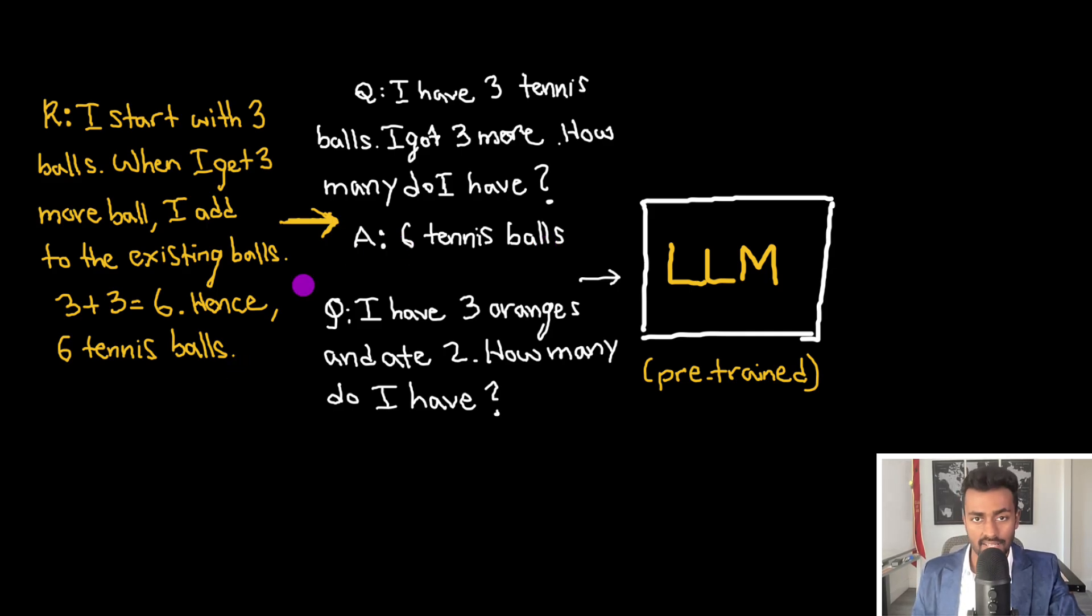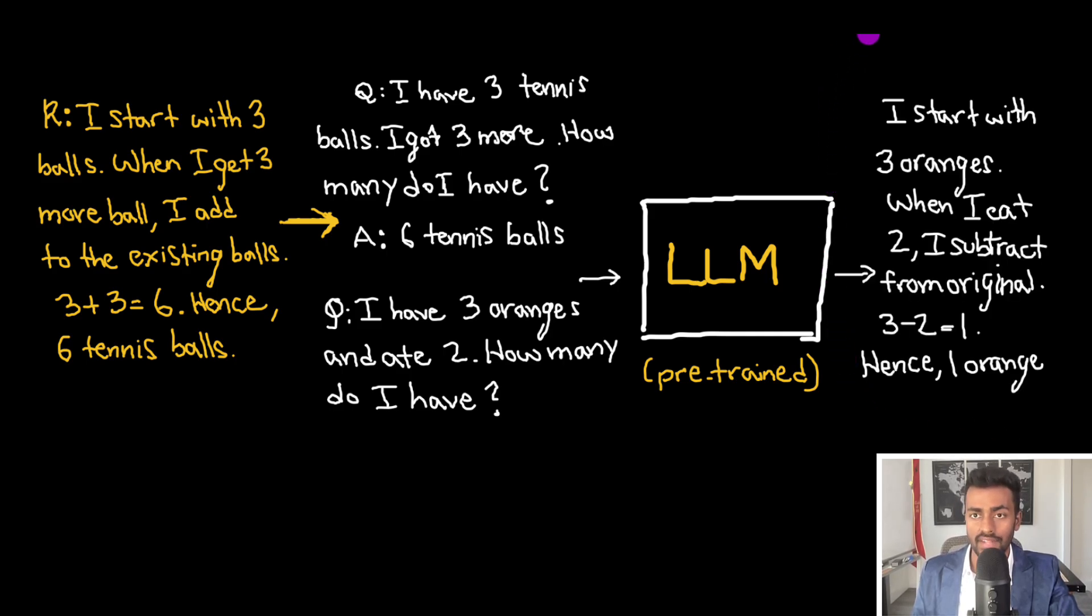And now when we pass in the question with this more informed prompt with a chain of thought, we can then get a solution that is much more structured with some rationale. So we prompt the LLM to say, okay, I start with three oranges. And when I eat two, I subtract them from the original. And because three minus two is one, hence, one orange should be the answer.